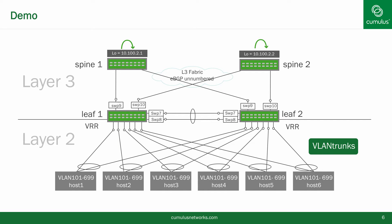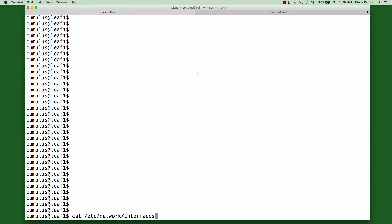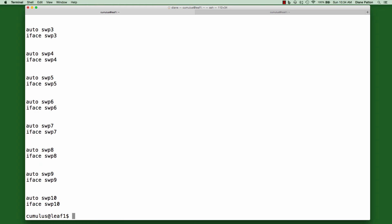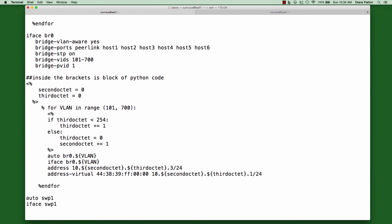This depicts the lab setup where we have six hosts, two leaves, and two spines. I'm running MLAG between the hosts and the leaves, and layer three with eBGP unnumbered between the leaves and the spine. I have 600 VLANs towards the hosts, and loopbacks on the spine are being advertised by BGP, which we'll ping later to demonstrate connectivity. Leaf one and leaf two are configured similarly, so let's log in to leaf one. Let's start by taking a look at that /etc/network/interfaces file. As you can see here, we have the exact same Mako script as we showed earlier, and this script is generating all of those SVIs from 101 all the way up to 699.